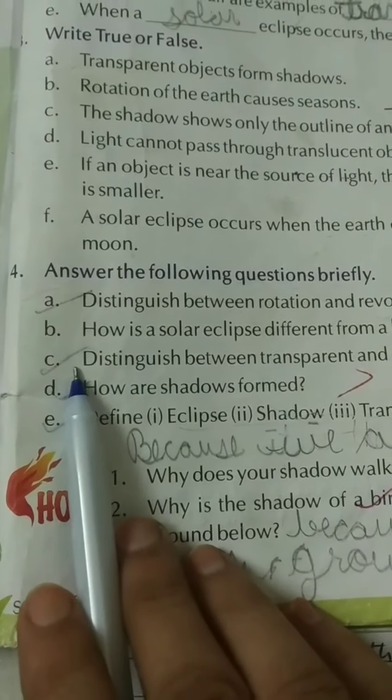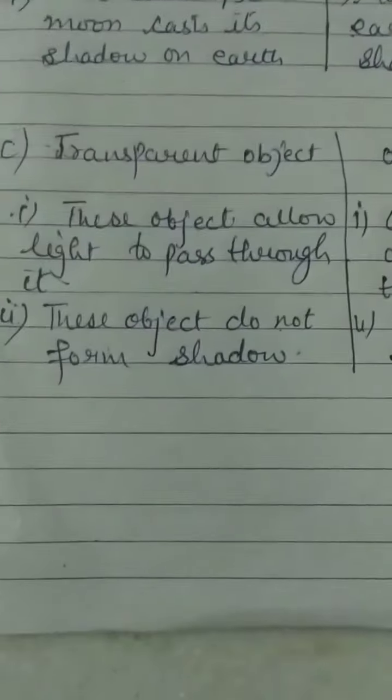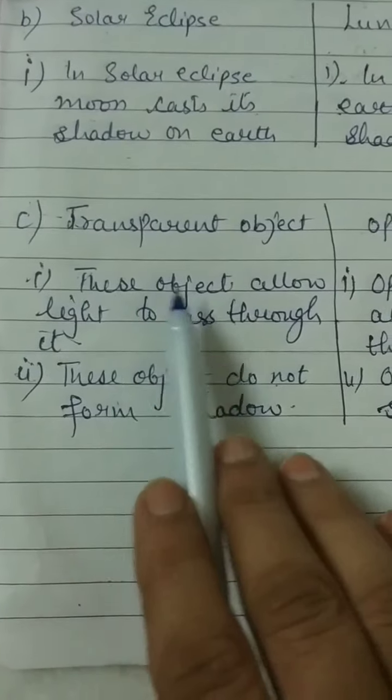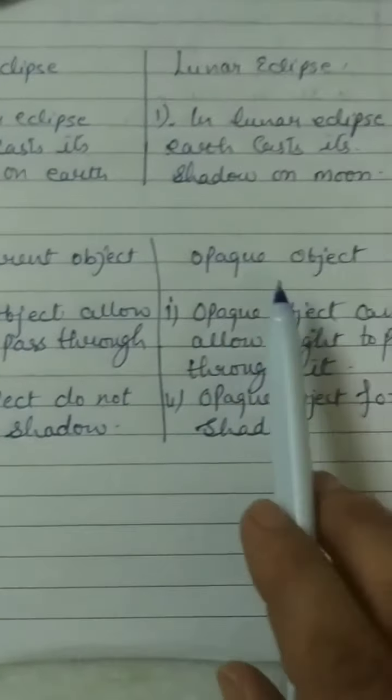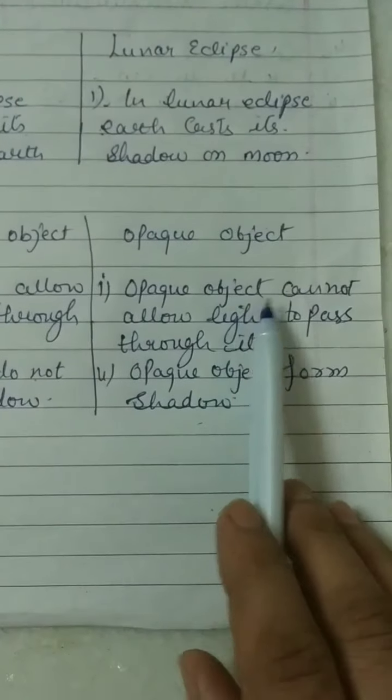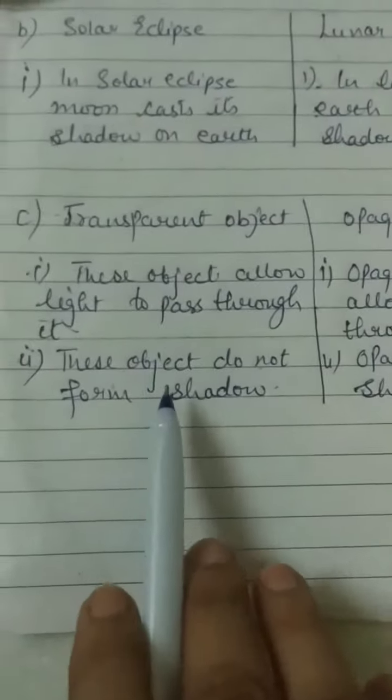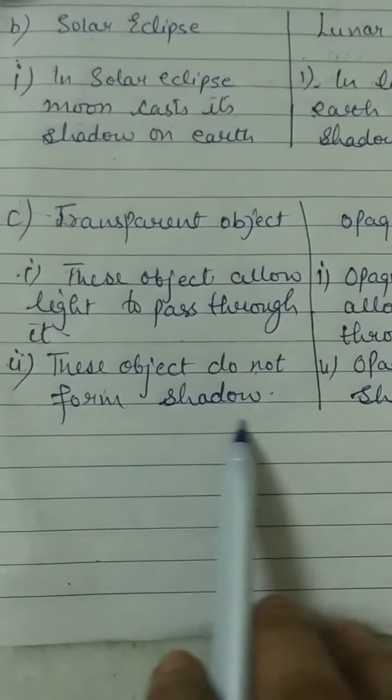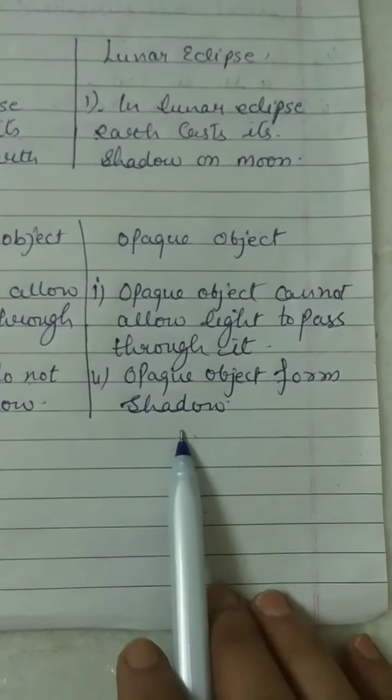Part C: Distinguish between transparent and opaque object. Transparent object: These objects allow light to pass through it. Opaque object: Opaque object cannot allow light to pass through it. Second point: Transparent objects do not form shadow. Opaque objects form shadow.